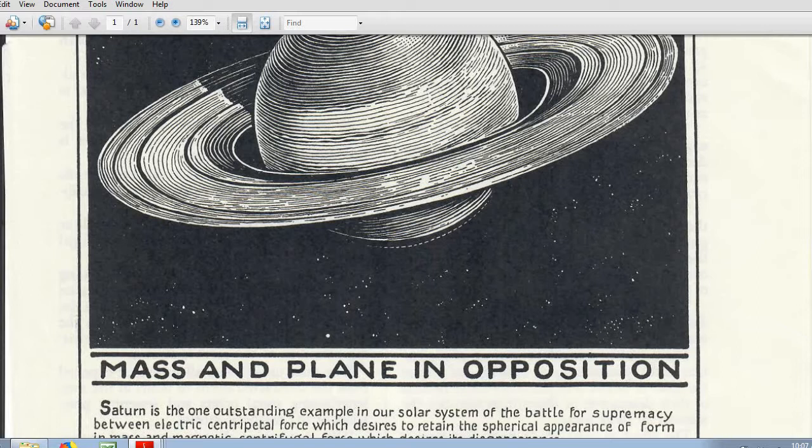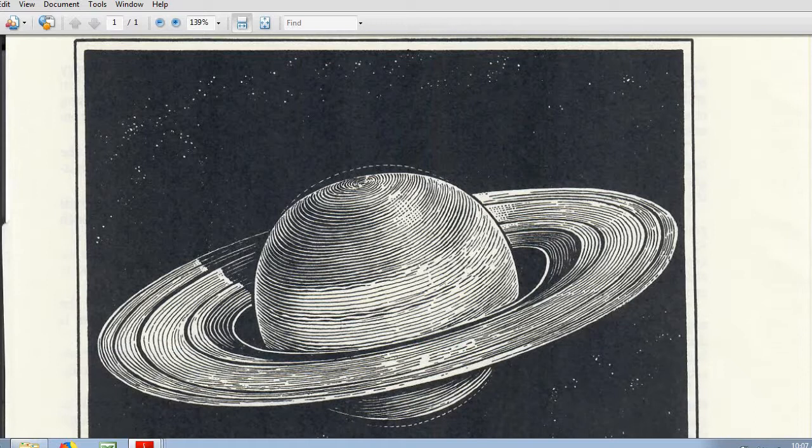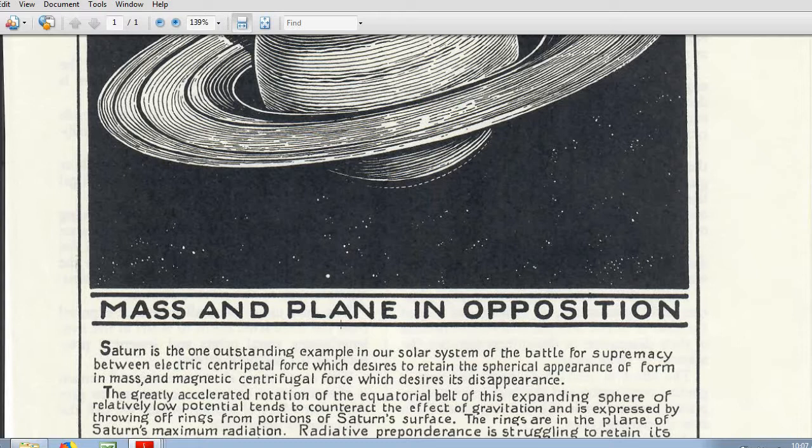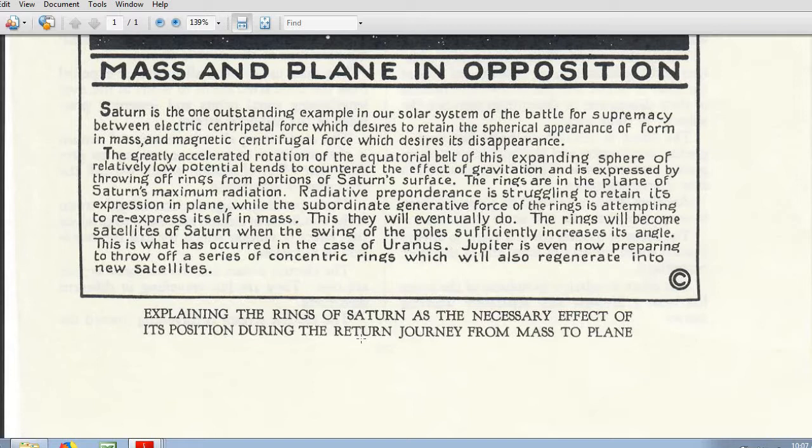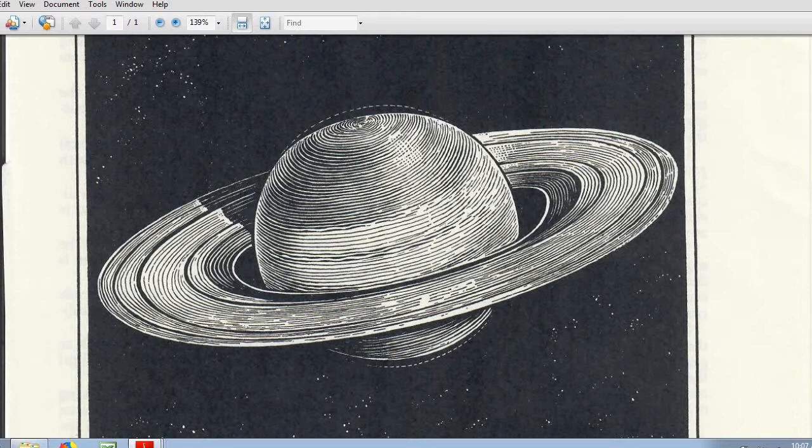So Walter Russell has a drawing here of basically what you see out in space all the time, which is a planet that has already spiraled away from its sun. And it's like Saturn. And it's halfway between mass and plane. And so you can see that this is what happens to all matter is that it's basically spinning all this matter back out through its vortexes the way that it wound up originally. And so now this is all spinning back out into its inertial planes.